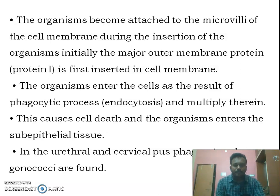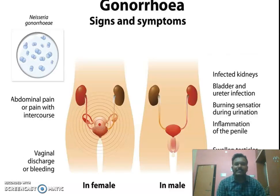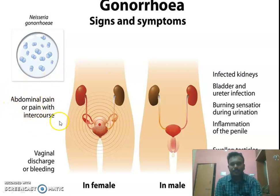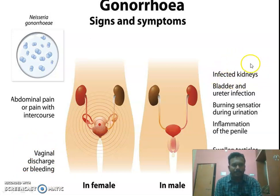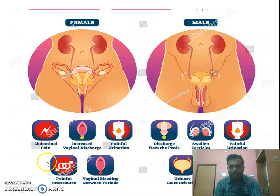During menstruation, Neisseria gonorrhoeae may spread to the fallopian tubes causing severe infection. In females, signs and symptoms include abdominal pain, pain during intercourse, vaginal discharge, vaginal bleeding, painful urination, and bleeding between periods. In males, symptoms include urinary tract infections, burning sensation during urination, inflammation of the penis, swollen testicles, and discharge from the penis.